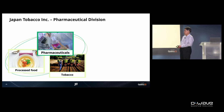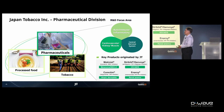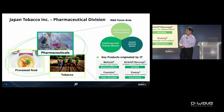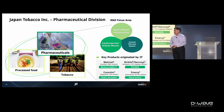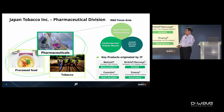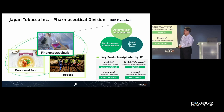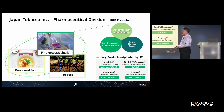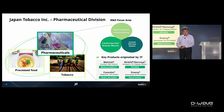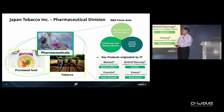JT has three divisions, and I belong to the pharmaceutical division. Previously, we have developed some novel pharmaceutical drugs, as shown here. Drug design work is very time-consuming, and so we are very proud of these achievements.